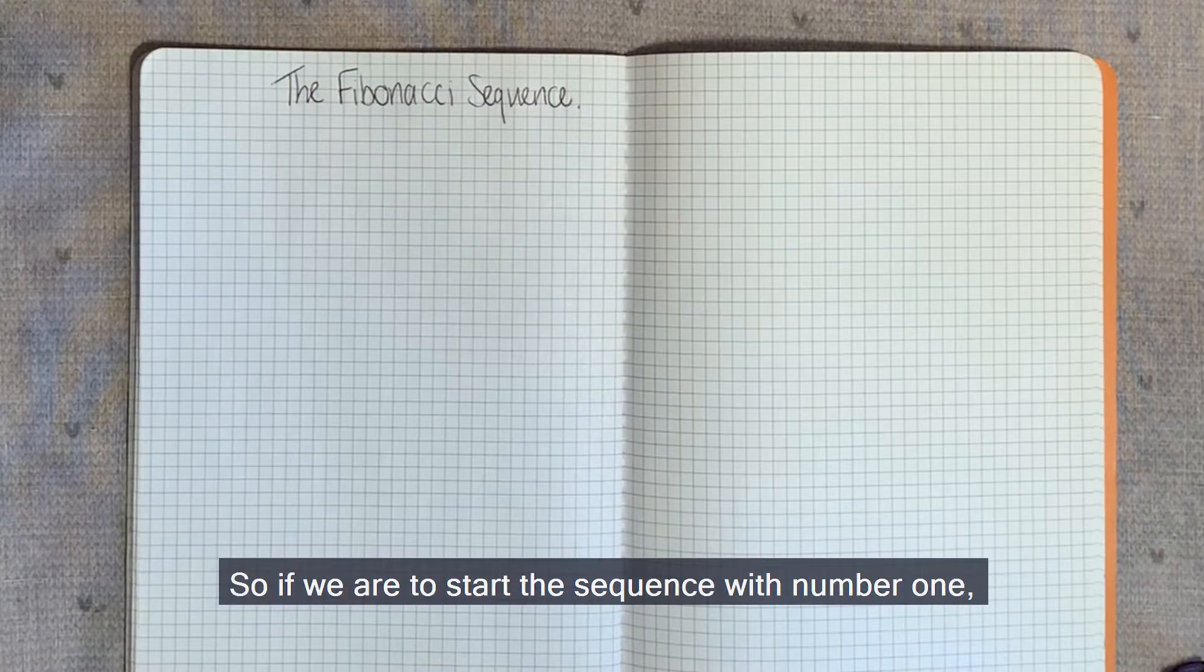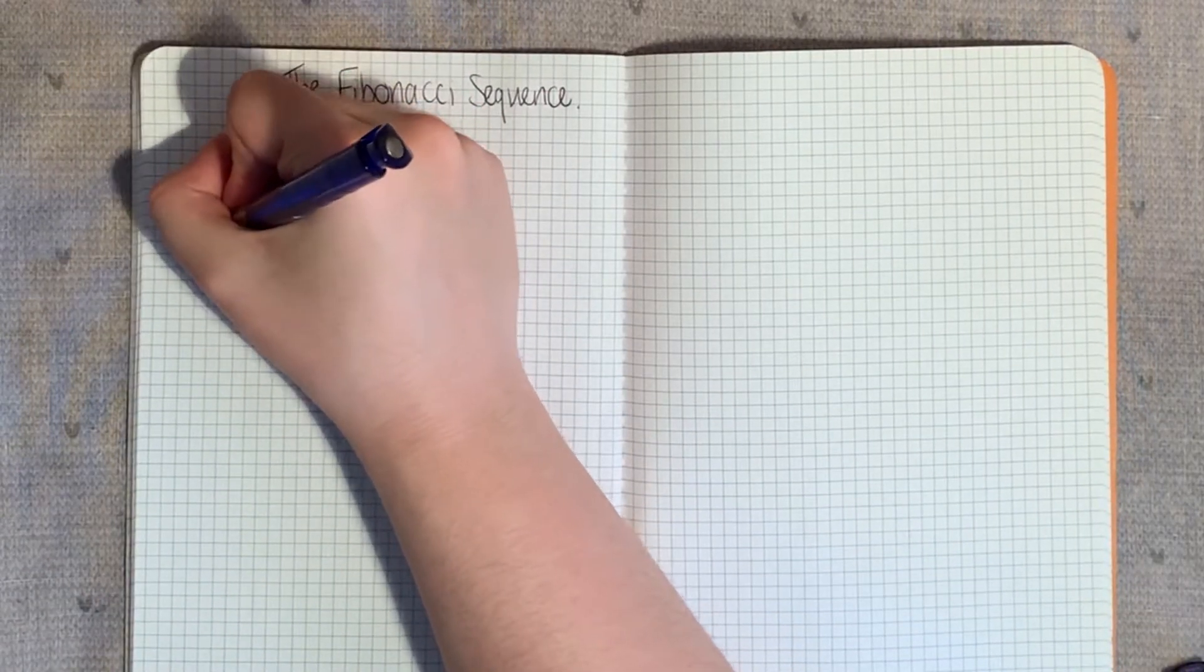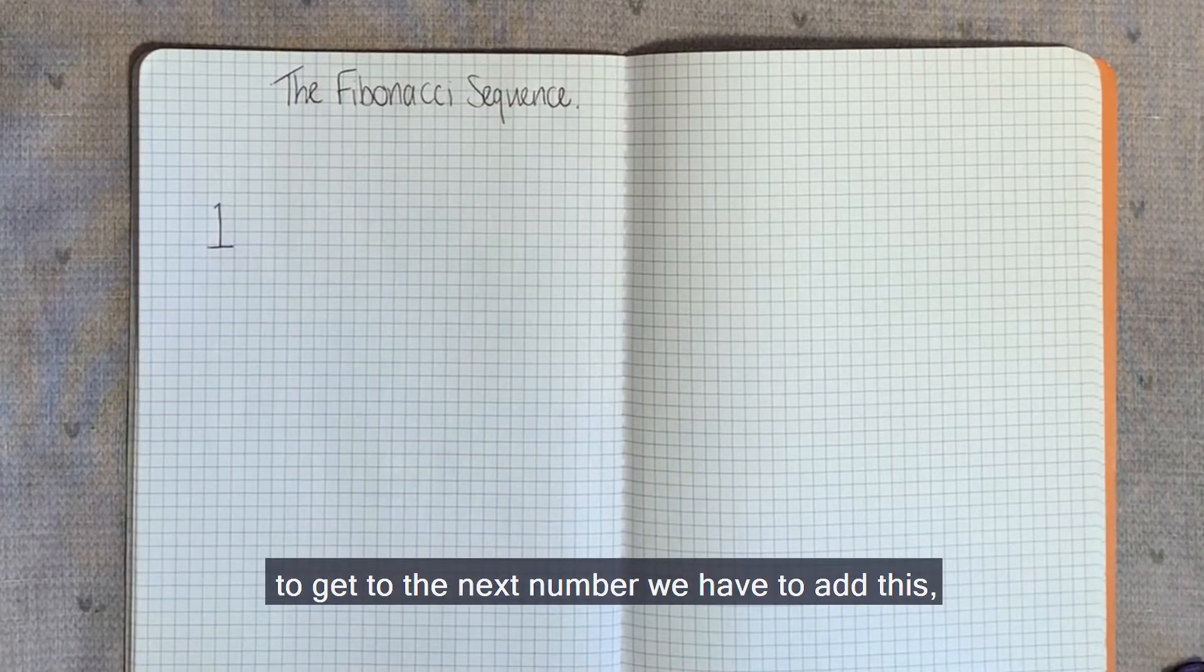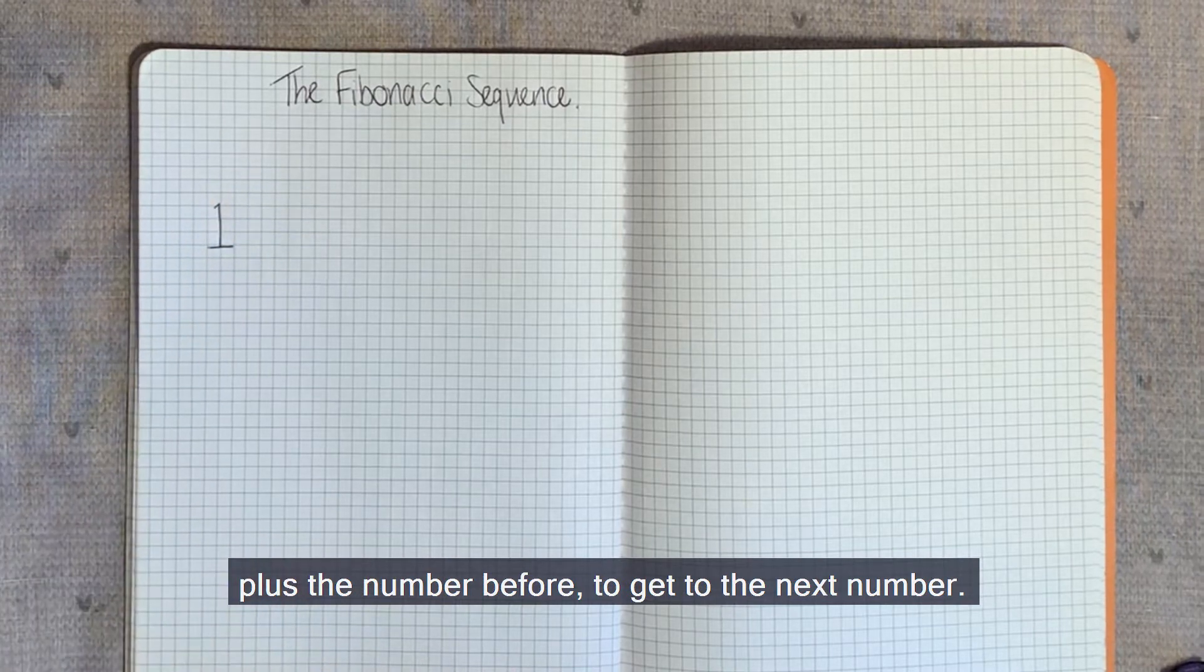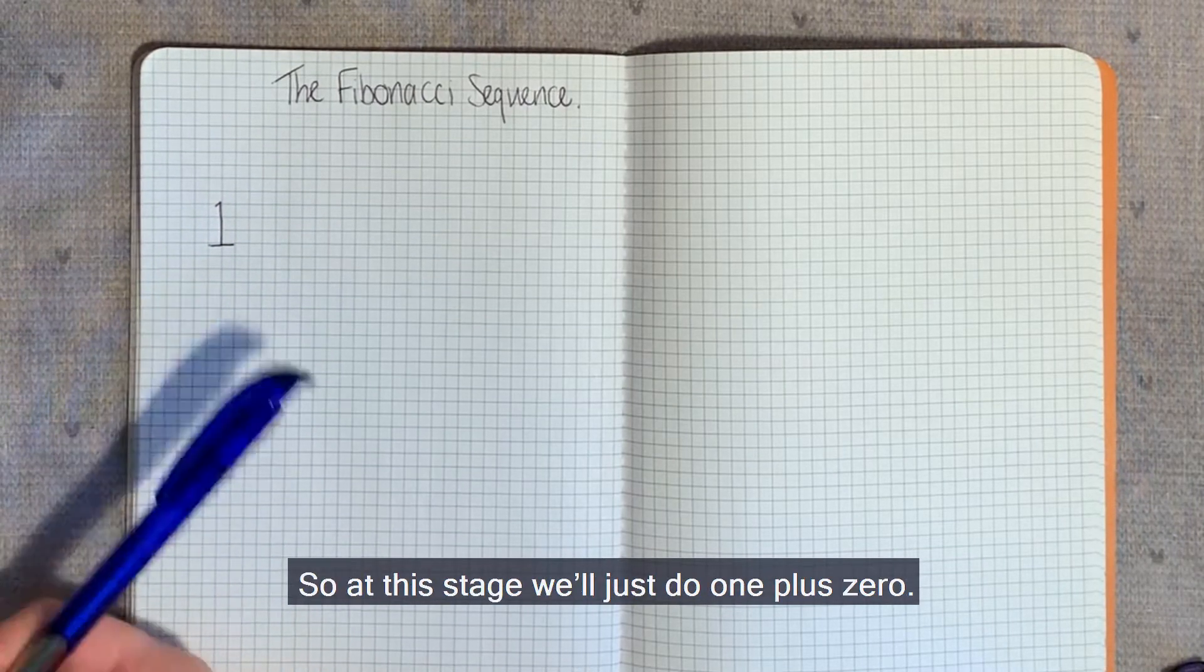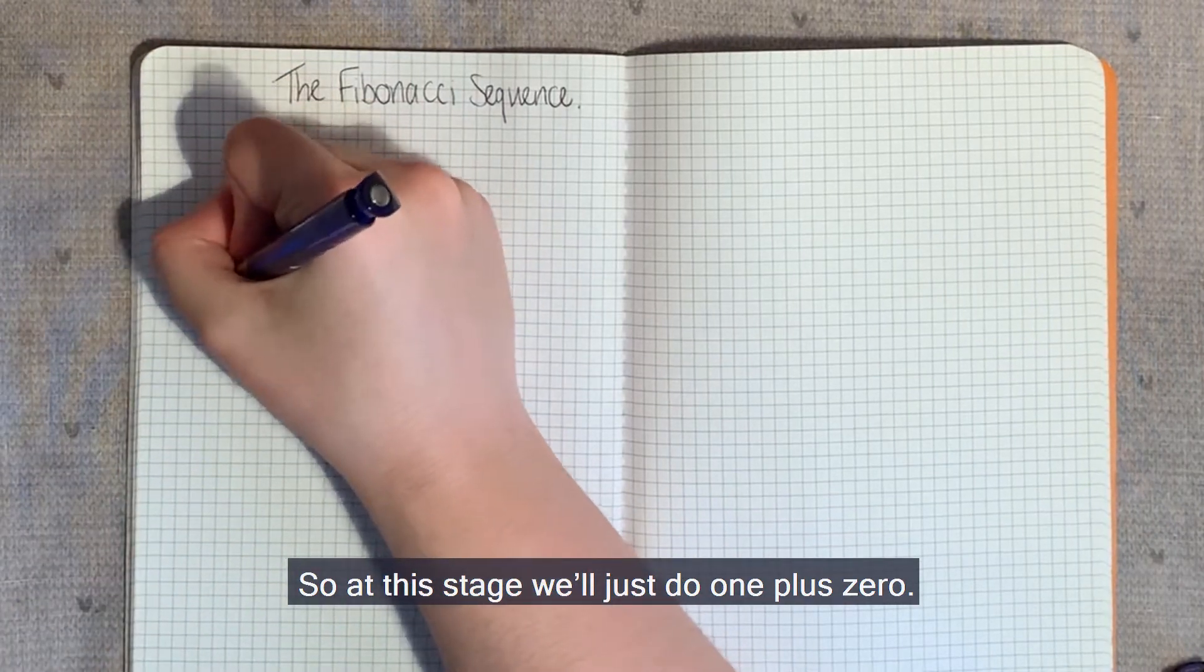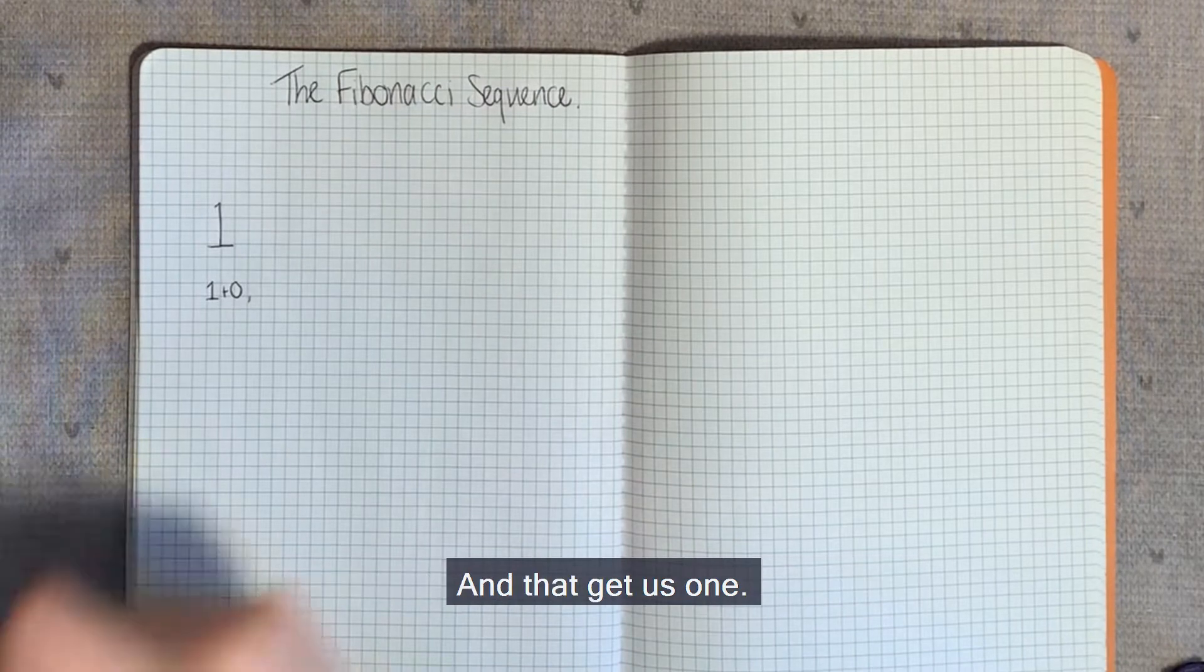So if we were to start the sequence with number one, one. To get to the next number, we have to add this plus the number before it. But there's no number before this one. So at this stage, we'll just do one plus zero, and that gets us one.